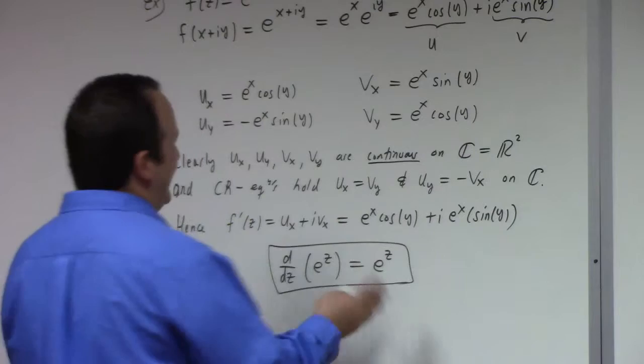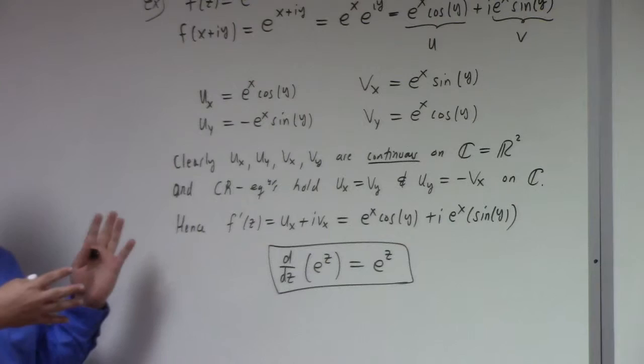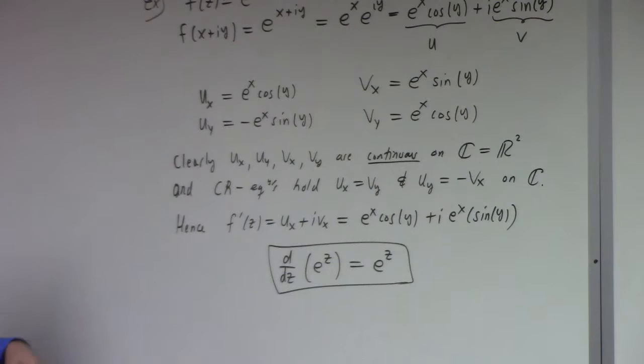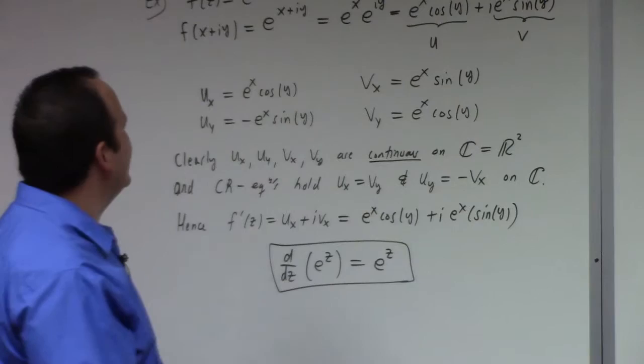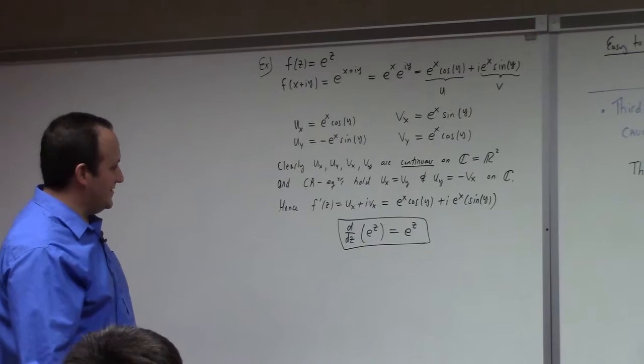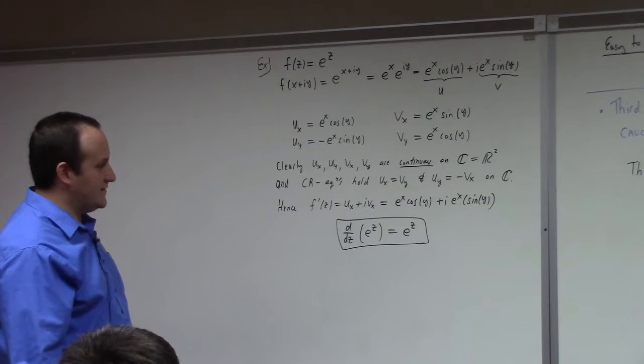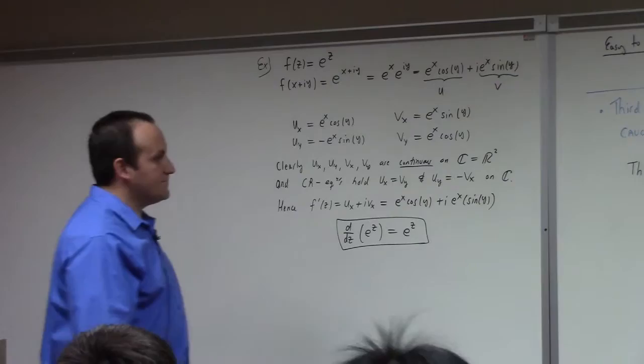This is a monstrous beast to try to think about in terms of the difference quotient, and Carathéodory doesn't help you much either, but with Cauchy-Riemann we dispatch it with ease. Someone mentions power series — we have yet to develop the theory of complex power series, so that's outside our grasp at the moment, but yes, if defining the exponential over an arbitrary associative algebra, you'd define it in terms of its power series. But that's another day.